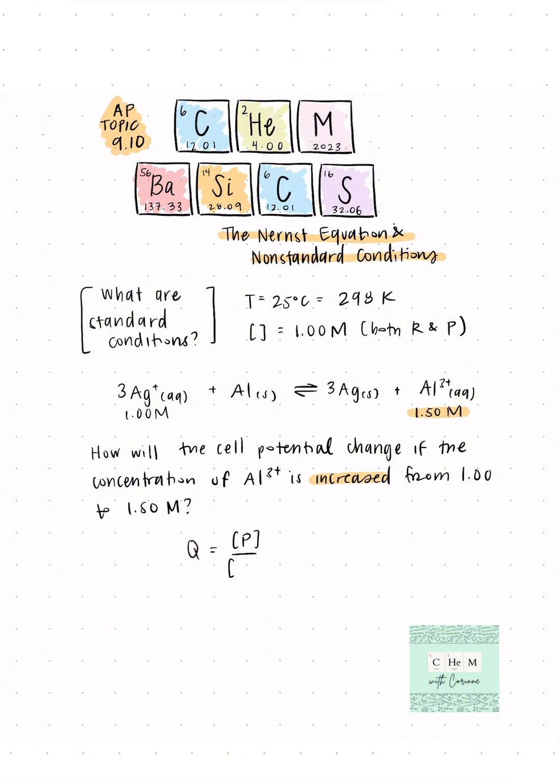We're going to go back to Q, the reaction quotient. Q equals the concentration of products over reactants. Because we have two solids, we're just looking at the concentration of Al3+ over the concentration of Ag+. If Al3+ increases, Q will increase.